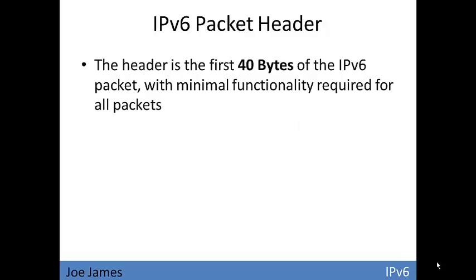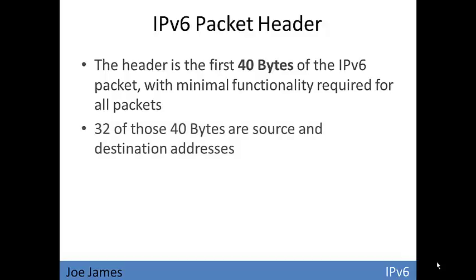The packet header for IP version 6 is fixed at 40 bytes — this is important. IP version 4 had a variable length packet header because optional fields may or may not be included, which would change the length of the header. Keep in mind that 32 of those 40 bytes are source and destination addresses, so there's not a lot of extra data in the packet header. It's pretty lean and mean.